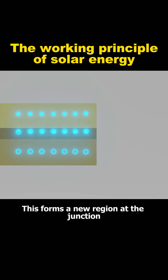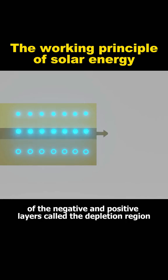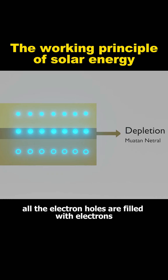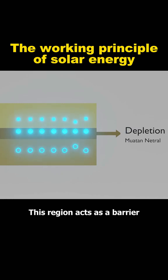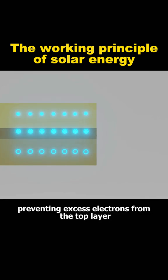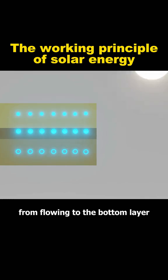This forms a new region at the junction of the negative and positive layers called the depletion region. In the depletion region, all the electron holes are filled with electrons, creating a balanced and electrically neutral state. This region acts as a barrier, preventing excess electrons from the top layer from flowing to the bottom layer.